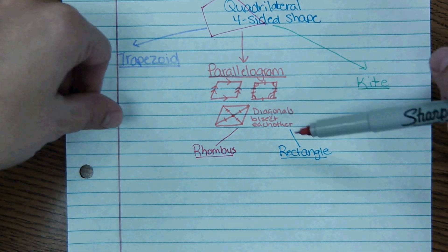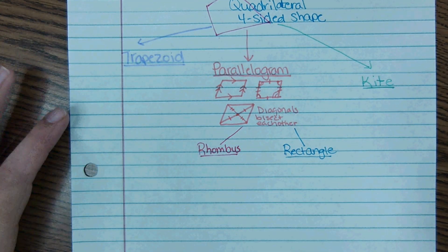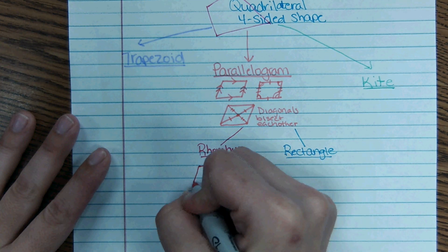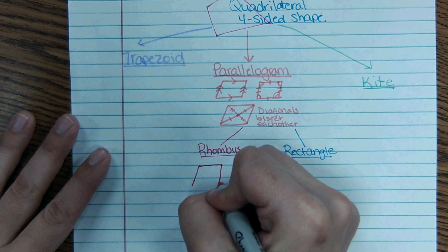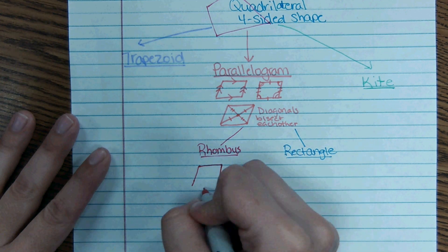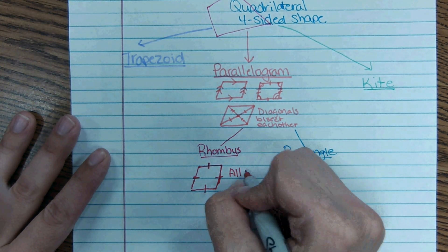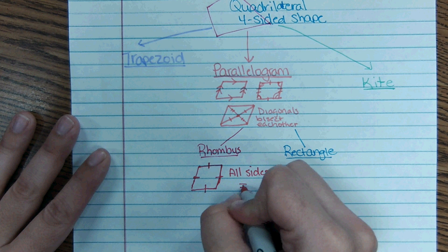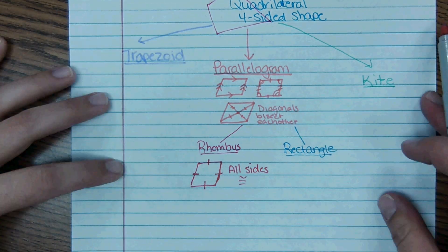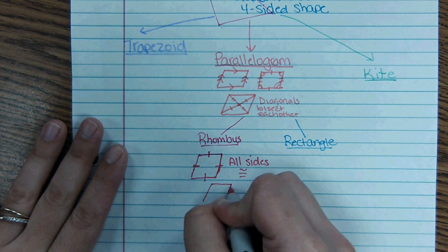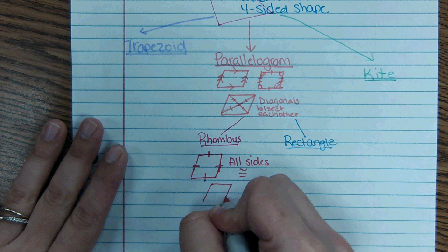These two shapes inherit all the properties of a parallelogram and then add more specific ones. A rhombus — which you may remember as a diamond from elementary school — is a parallelogram where all the sides are the same measure. So while a parallelogram has opposite sides equal, in a rhombus all sides are congruent, including consecutive sides.